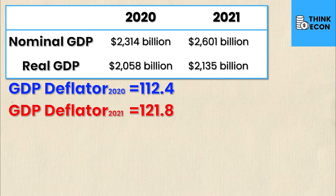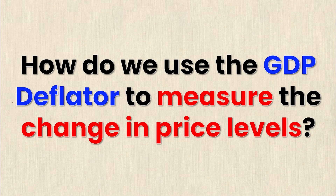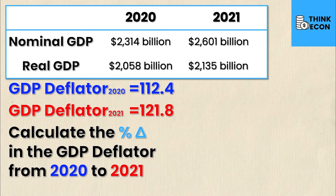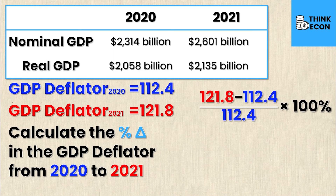Calculating the GDP deflator seems easy enough, but the real question is how do we use it to measure the change in price levels between 2020 and 2021? It's as simple as calculating the percentage change in the GDP deflator. Percentage change is new minus old over old — so the new GDP deflator is 121.8 (2021), and we subtract the old GDP deflator of 112.4 (2020), then divide by 112.4 and multiply by 100%.